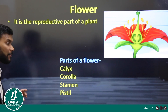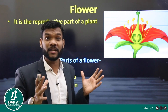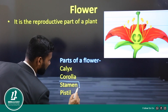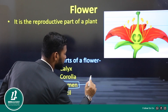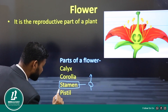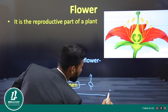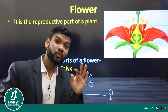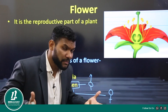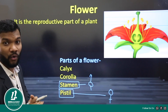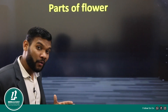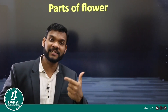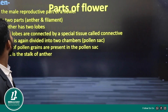Since calyx and corolla are non-essential, that means there will be some essential parts which are involved in reproduction. Those essential parts are the stamen, which is the male reproductive structure, and the pistil, which is the female reproductive structure. We will discuss these two essential parts in detail.